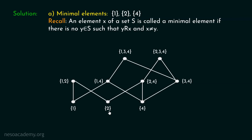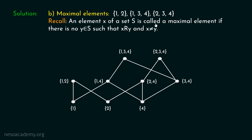Now let's find the maximal elements. These three elements are the maximal elements because they are at the topmost place in this Hasse diagram. In other words, these three elements are not related to any other element — other elements are related to these, but not the other way. An element x of a set S is called a maximal element if there is no y belonging to S such that x is related to y, with x not equal to y. Therefore, these three sets are the maximal elements.